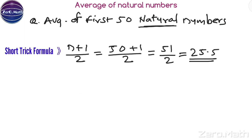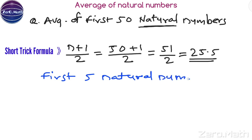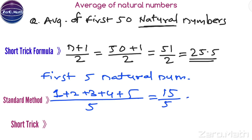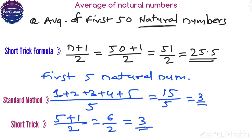To prove the short trick works, let us compare with the standard method. Find the average of the first 5 natural numbers: 1, 2, 3, 4, 5. Sum = 15, divided by 5 = 3. Now using the short trick: N = 5, so (5 + 1) / 2 = 6 / 2 = 3. You can see either method gives the same answer, and the short trick is way faster.